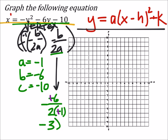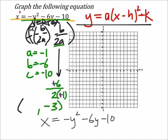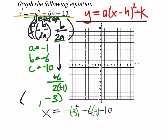To find the x-value, I go back into the equation and replace y with negative three to complete the ordered pair for the vertex. Substituting: negative of (negative three) squared minus six times (negative three) minus ten. That gives negative nine plus eighteen minus ten. Combining: negative nine plus eighteen is nine, minus ten gives negative one. So the x-value of the vertex is negative one.